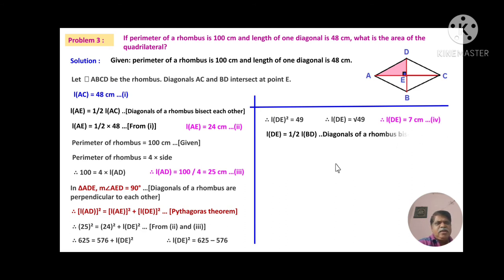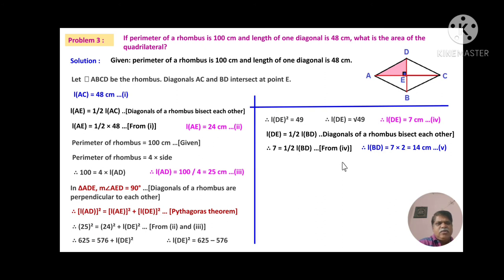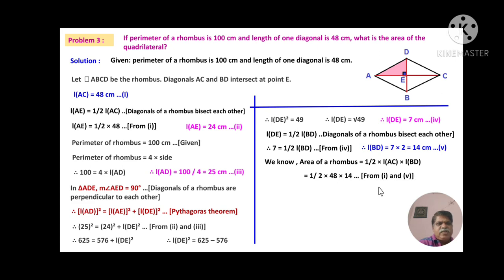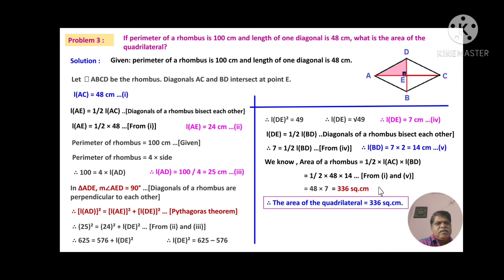Since L(DE) = (1/2) × BD, we get 7 = (1/2) × BD, so BD = 14 cm. Now we know both diagonals: AC = 48 cm and BD = 14 cm. Area of rhombus = (1/2) × AC × BD = (1/2) × 48 × 14 = 48 × 7 = 336 square centimeters. The area of the quadrilateral is 336 sq cm.